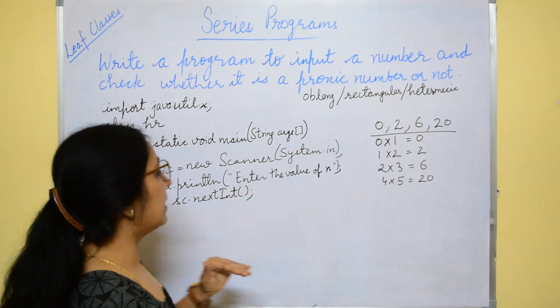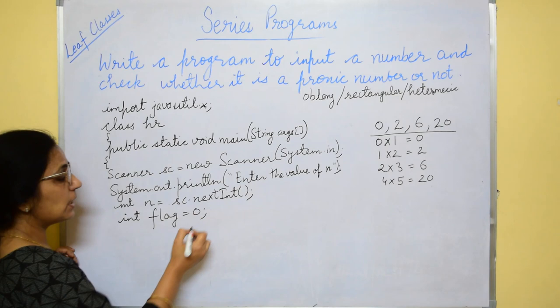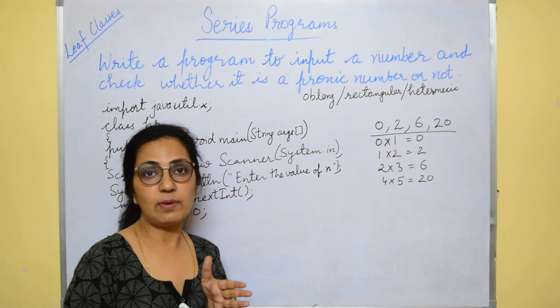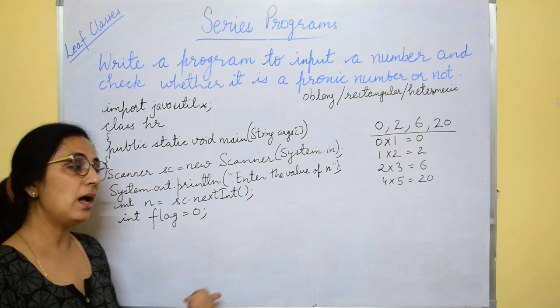To find this let's input the number n equals to se dot next int. Here I am taking a flag value equals to 0 which indicates if it is 0 at the end of the loop that means number is not pranic. And when we check condition and condition satisfies, we change the flag value. So that will be used as indicator.